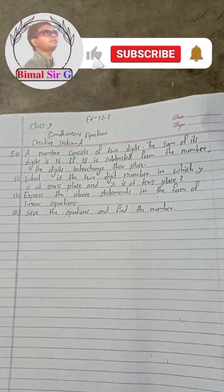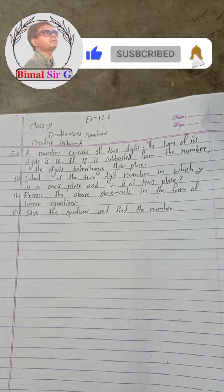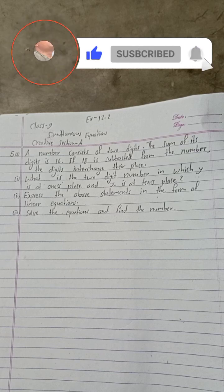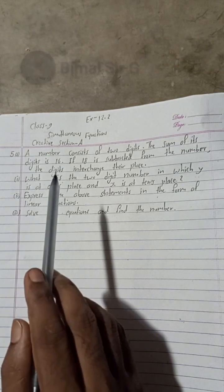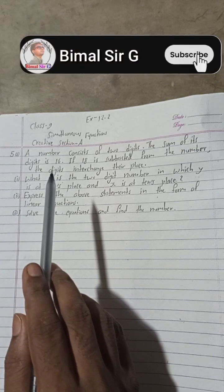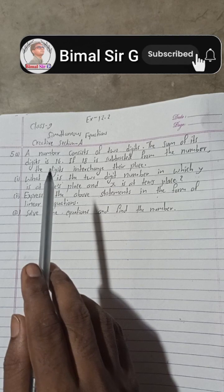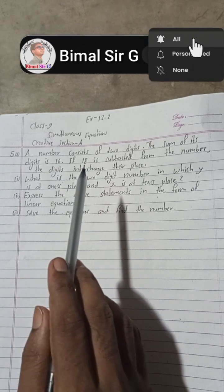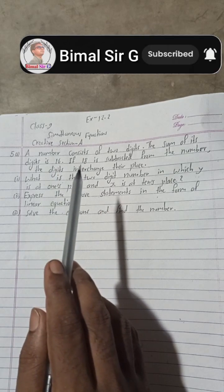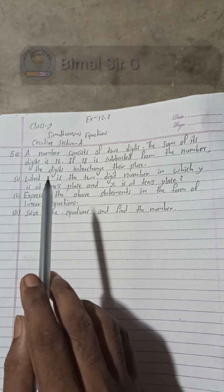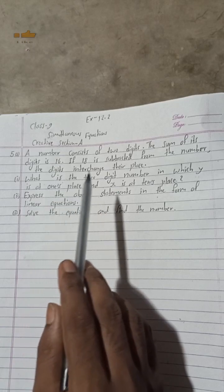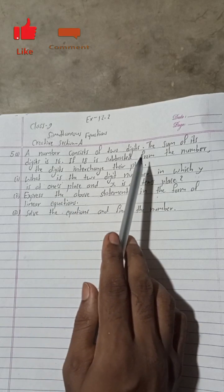Hi everybody. Welcome back to Vimal Surjee YouTube channel. This is question 5A from class 9, simultaneous equations, exercise 12.2, creative section A. A number consists of two digits.